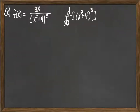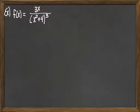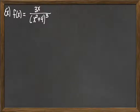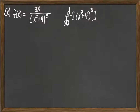Oftentimes we find ourselves needing to use the chain rule as part of some product or quotient. This next example looks at the function 3x over (x squared plus 4) to the third. We have a fraction, which is going to require us to use the quotient rule. But first, in using the quotient rule, we're going to need to deal with the derivative of that denominator — (x squared plus 4) to the third. I'll focus on that part first, setting u equal to x squared plus 4.